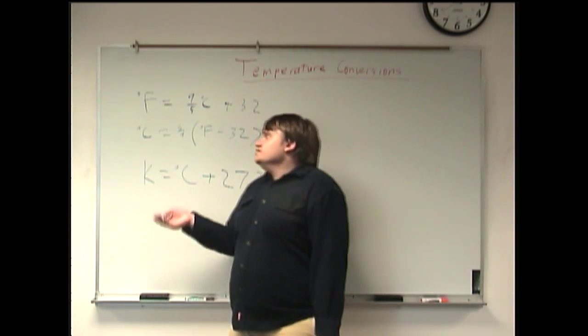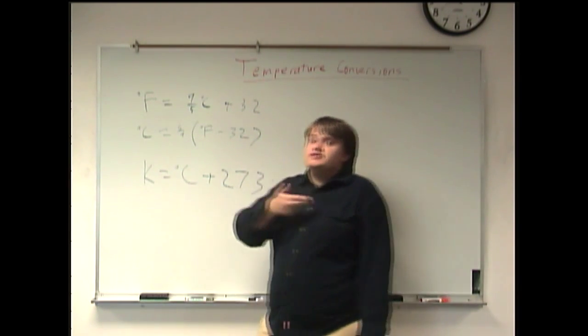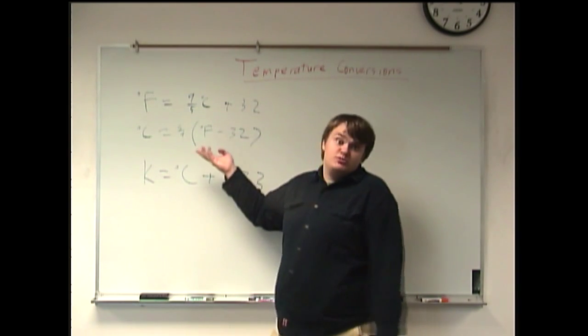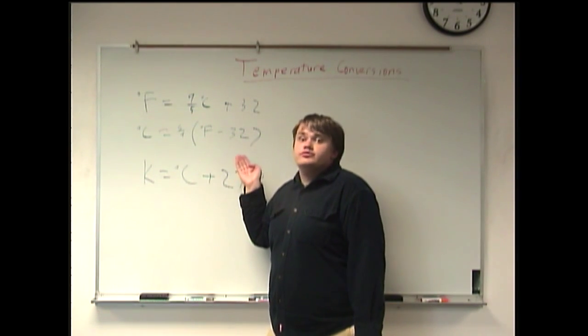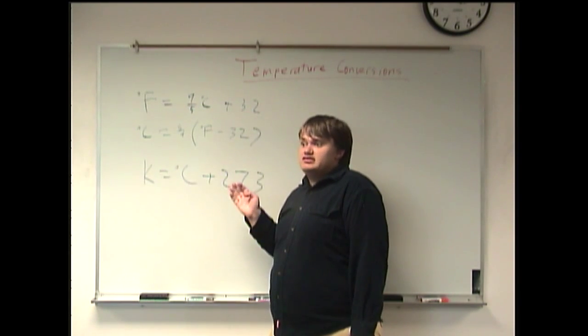Then, if you want to go the other way, from Fahrenheit to Celsius, you just subtract 32 from the Fahrenheit temperature, then multiply that by 5/9.